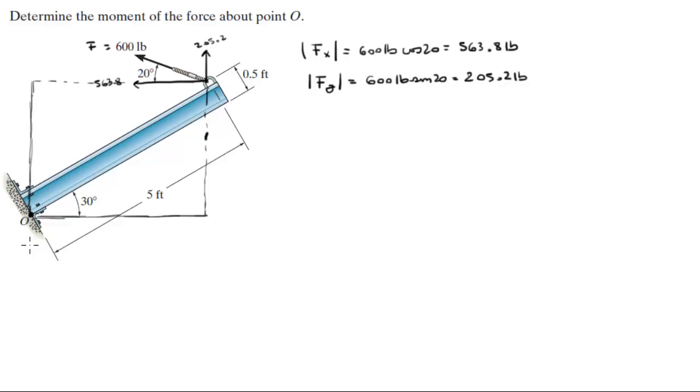So the length of this lever arm is equal to 5 feet cosine of 30, which will go all the way from here and a little bit over to here, and then 5 feet cosine of 30 minus 0.5 cosine of 60 degrees. I'm going to explain where I got the 60 degrees.